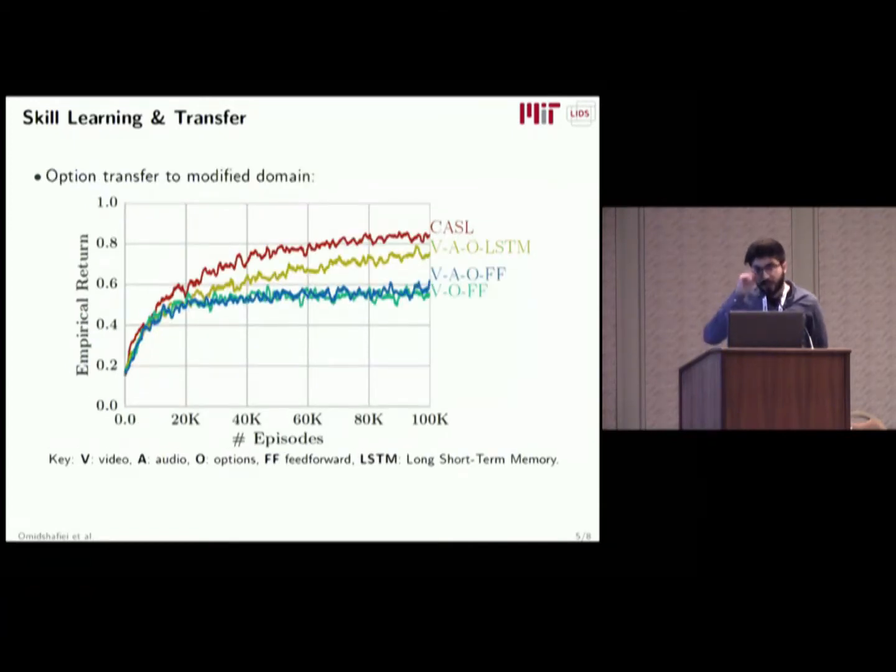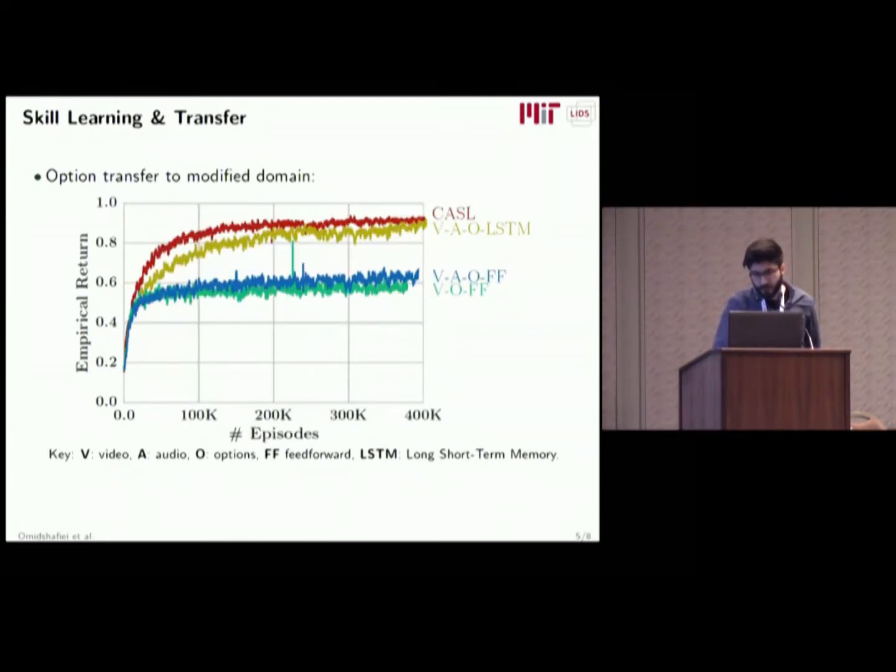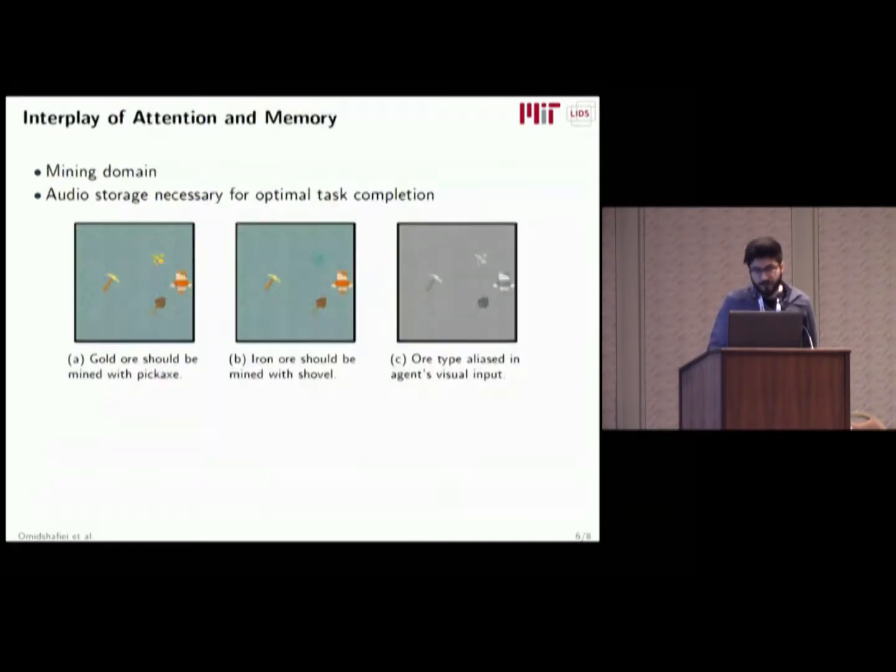We also considered a transfer learning case, where we now randomize the positions of the doors and the key, and use the pre-trained options from the previous domain. Again, the CASEL architecture outperforms the rest. But if we increase the total number of episodes from 100,000 to 400,000, eventually the non-attentive one catches up to CASEL. The main takeaway is that cross-modal attention accelerates the skill learning and transfer process.